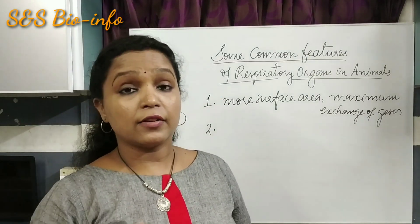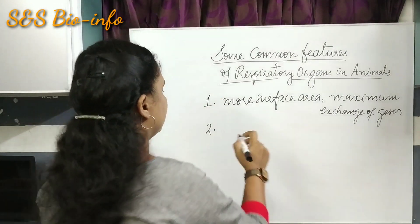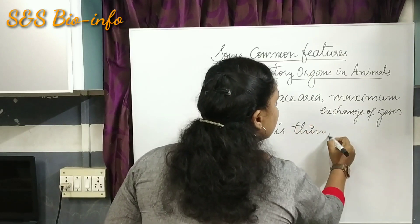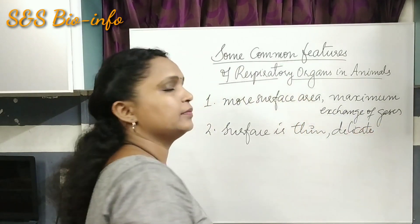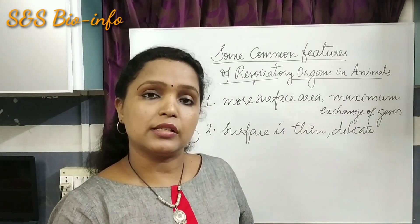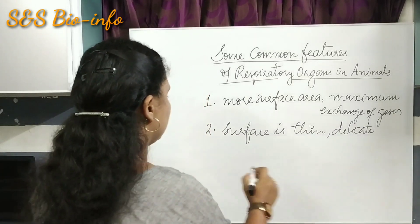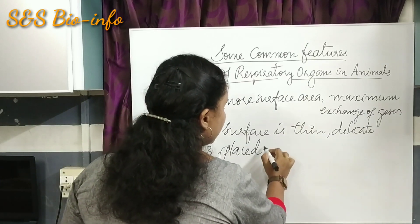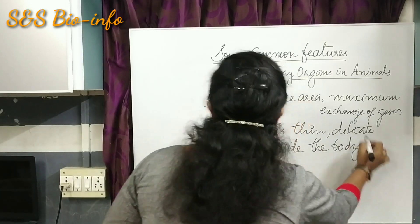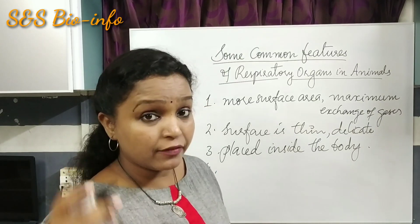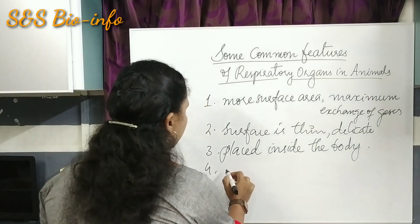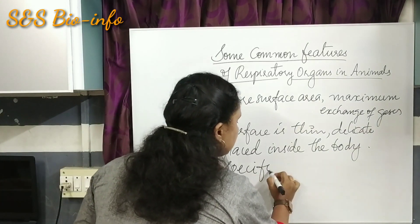Second: the surfaces are very thin and delicate. Third: in order to protect the thin and delicate surfaces, those organs are placed within the body of animals. Fourth: there will be a specific passage to direct the air towards the site of exchange of gases.